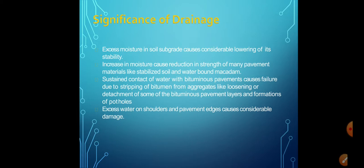Surface drainage of the road is to be effected with the help of a well-designed and constructed surface drainage system, consisting of components such as: camber or cross slope of the pavement surface and shoulder, roadside drainage, and cross drainage structures such as culverts and bridges.